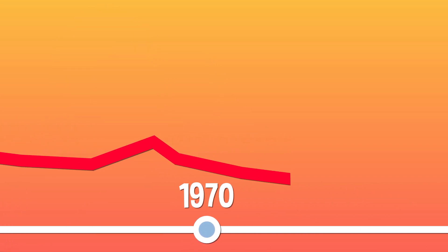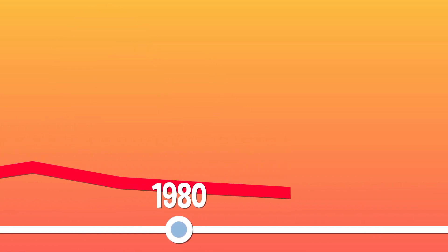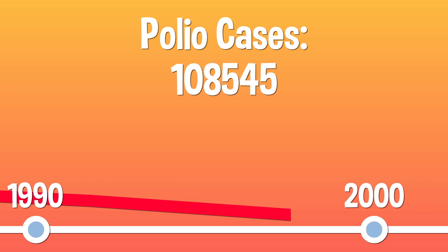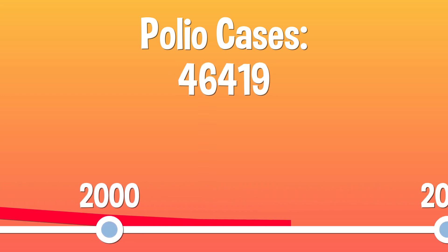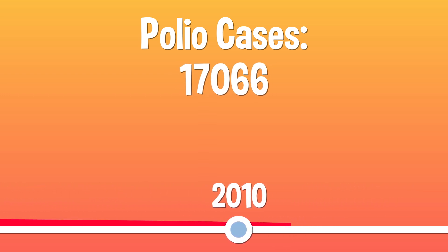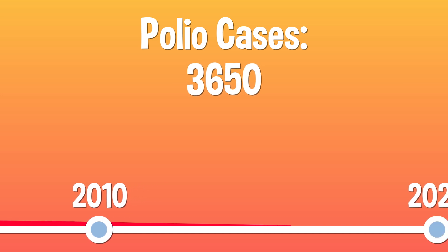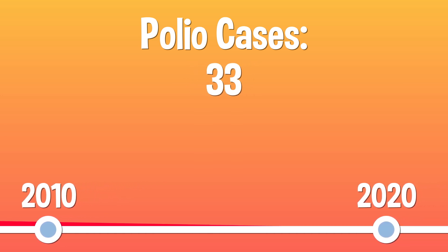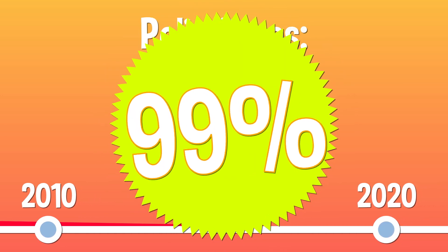Over the last 30 years, polio vaccines have all but eliminated the terrible illness from most of the world. The number of known cases dropped from 350,000 to just 33 in 2018. That's more than 99%.